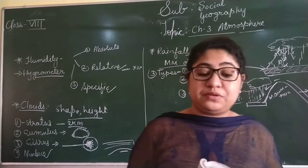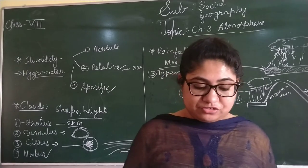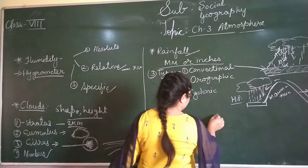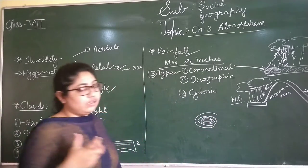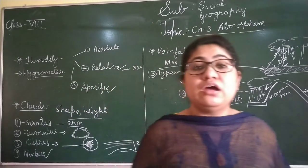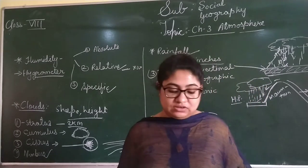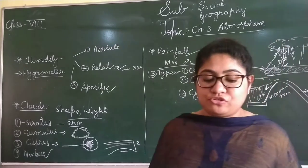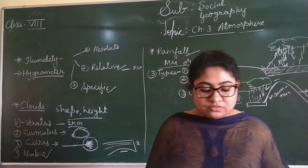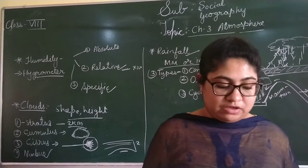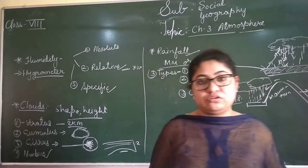Now we talk about cyclonic rain. In cyclonic rain, air blows in a spiral pattern. In a tropical cyclone, air rises upwards in a circular motion. Because of the rising air, rainfall starts. The condensation results in heavy rainfall. Cyclonic rain is also called frontal rain, when warm air masses and cold air masses meet — the warm air is forced to rise over the heavier cold air, resulting in rainfall.